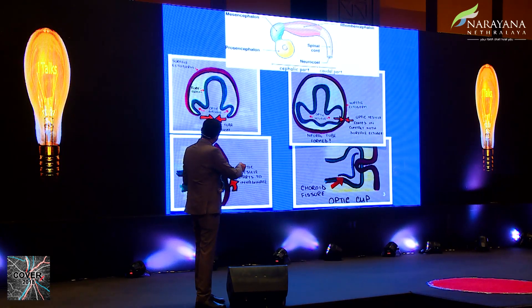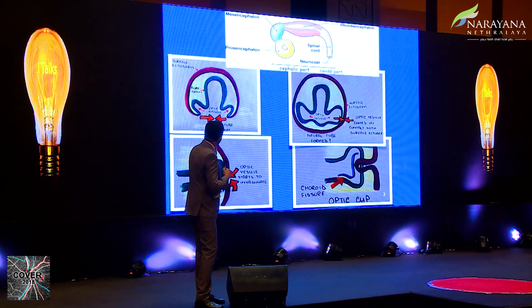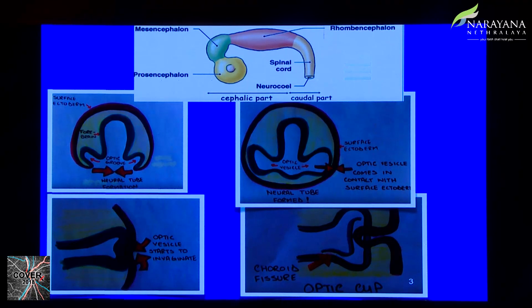On the 22nd day of embryonic development, you have four parts: prosencephalon, mesencephalon, rhombencephalon, and the spinal cord. Then you have neural tube formation and optic vesicle formation, followed by the choroidal fissure. Abnormal development here can produce different optic abnormalities and coloboma involving the iris, sclera, and choroid.